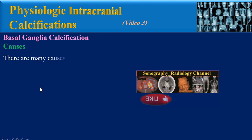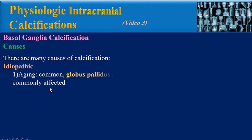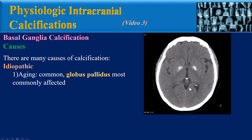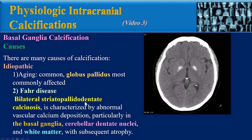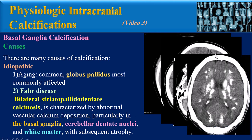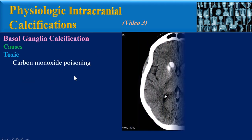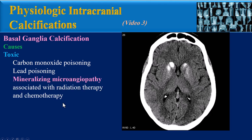The causes of basal ganglia calcification are many. The first group is idiopathic, which may be related to aging — basal ganglia calcification due to aging is common, with the globus pallidus most commonly affected. Another idiopathic cause is Fahr's disease, also known as bilateral striatopallidodentate calcinosis, characterized by abnormal vascular calcium deposition particularly in the basal ganglia, cerebellar dentate nuclei, and white matter, with subsequent atrophy.